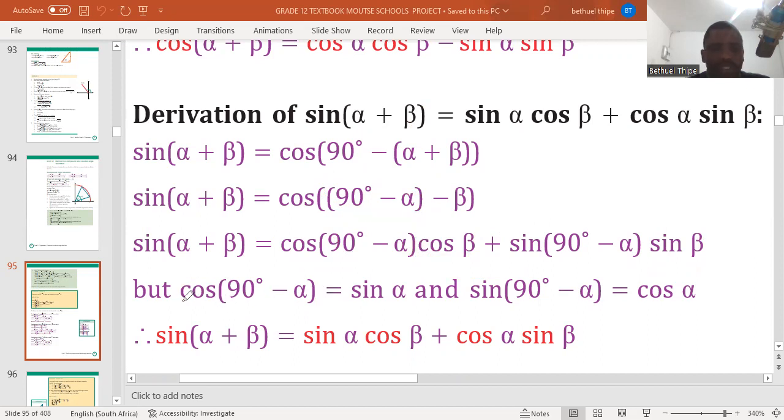So when we proceed, we change this part here. We notice that actually 90 minus, it must change cos to its co-function. And the co-function, of course, is sine.